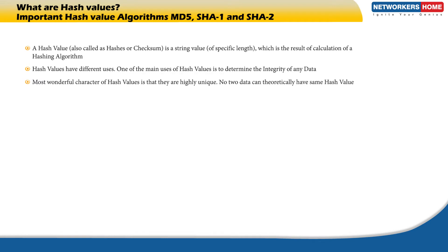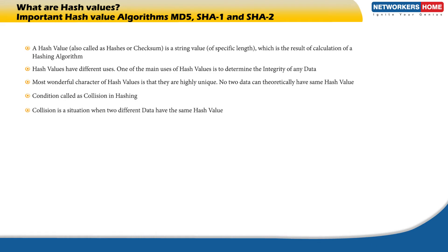The most wonderful characteristic of hash values is that they are highly unique. No two pieces of data can theoretically have the same hash value. A condition called collision in hashing occurs when two different data have the same hash value. The best hashing algorithm is one which cannot cause hash value collision.